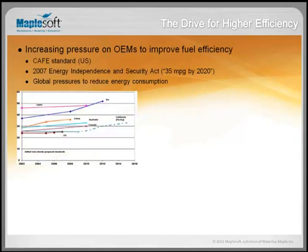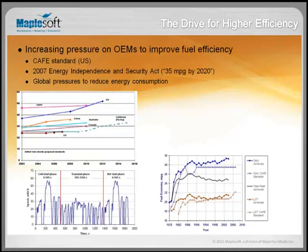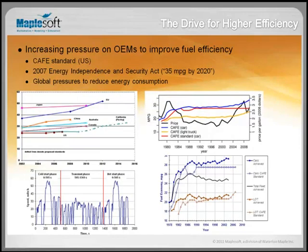Why was this created? The problems in industry motivating these simulations really come down to increasing pressure on OEMs to improve fuel efficiency. There are CAFE standards in the United States requiring higher and higher fuel efficiency — the 2007 Energy Independence and Security Act requires 35 miles per gallon average fleet fuel efficiency by 2020. There are also global pressures to reduce energy consumption across the board, independent of the automotive industry.